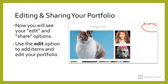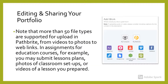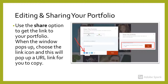Now you will see the Edit and Share options in the top right corner. Use the Edit option to add items and edit your portfolio. As mentioned earlier, you can upload many different types of files. You may be asked in your courses to provide your unique URL link for assignments. Use the Share option to get the link to your portfolio. When the window pops up, choose the link icon and this will pop up a URL link for you to copy. You can paste this link in a document for your assignment purposes.